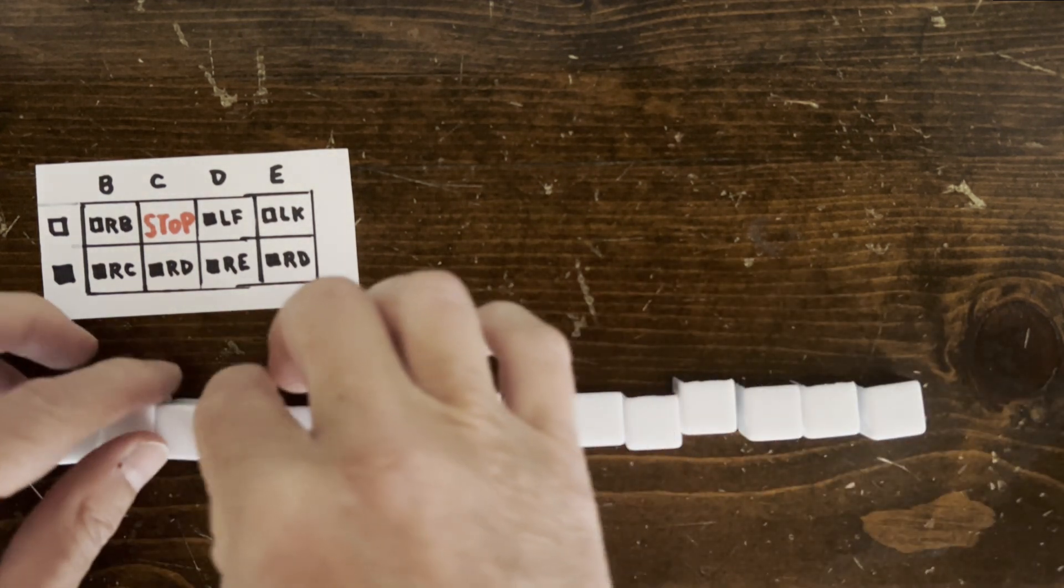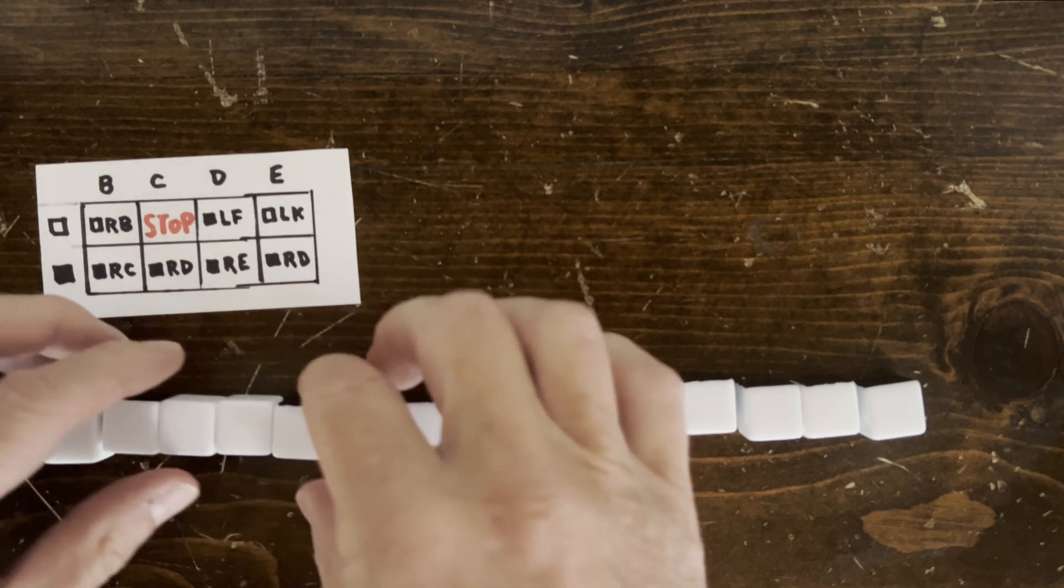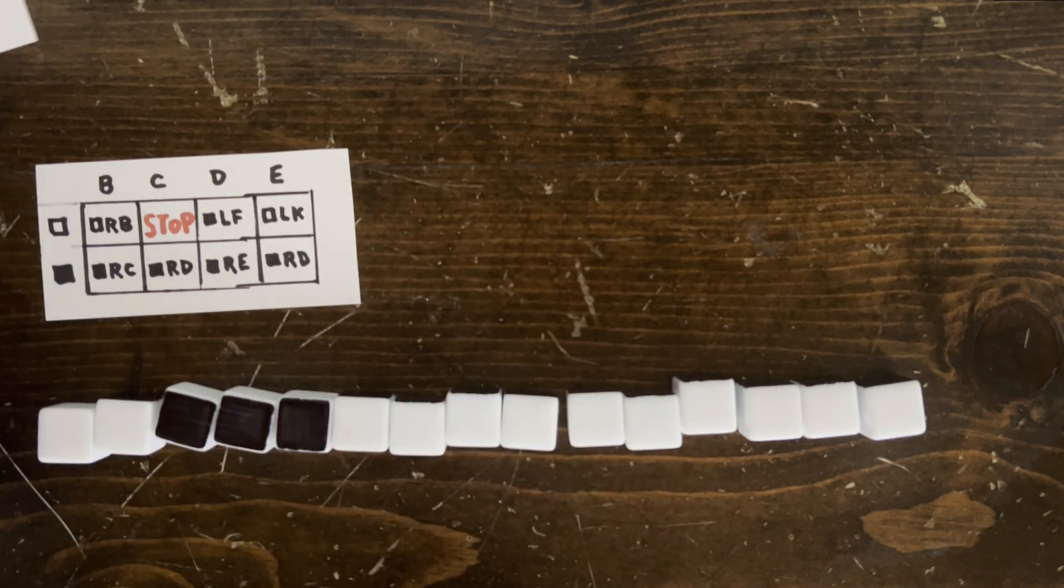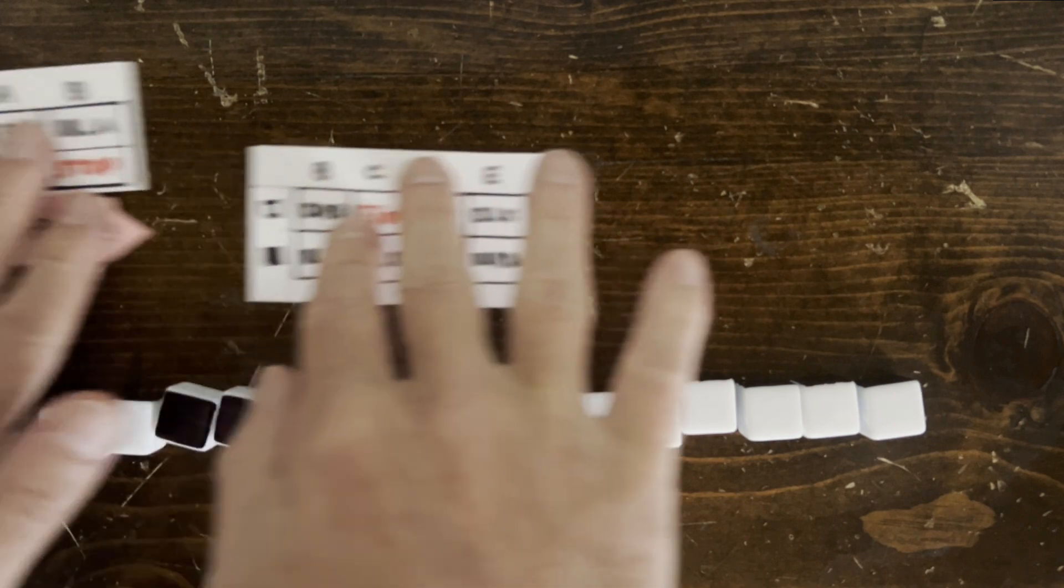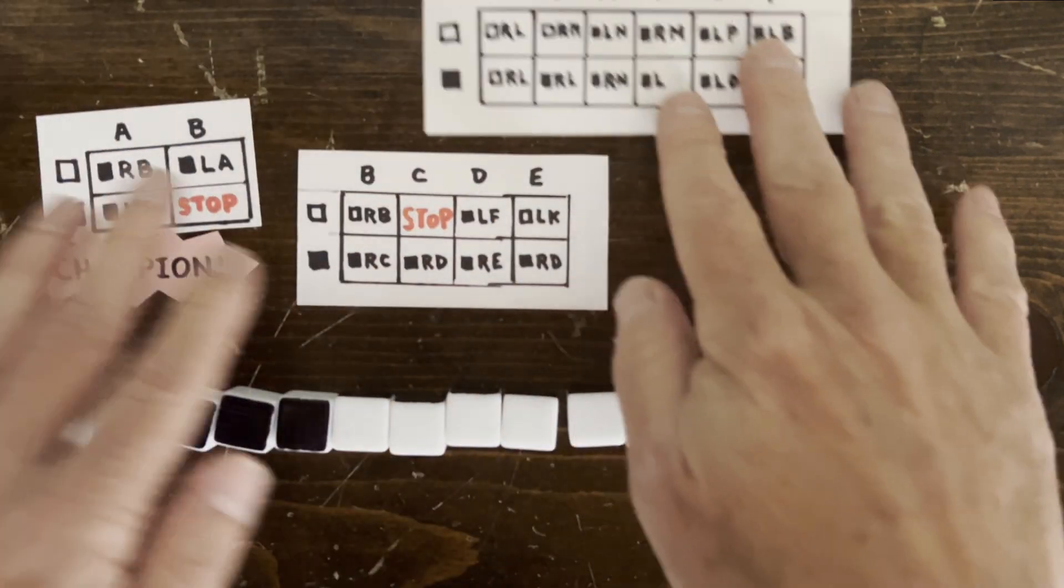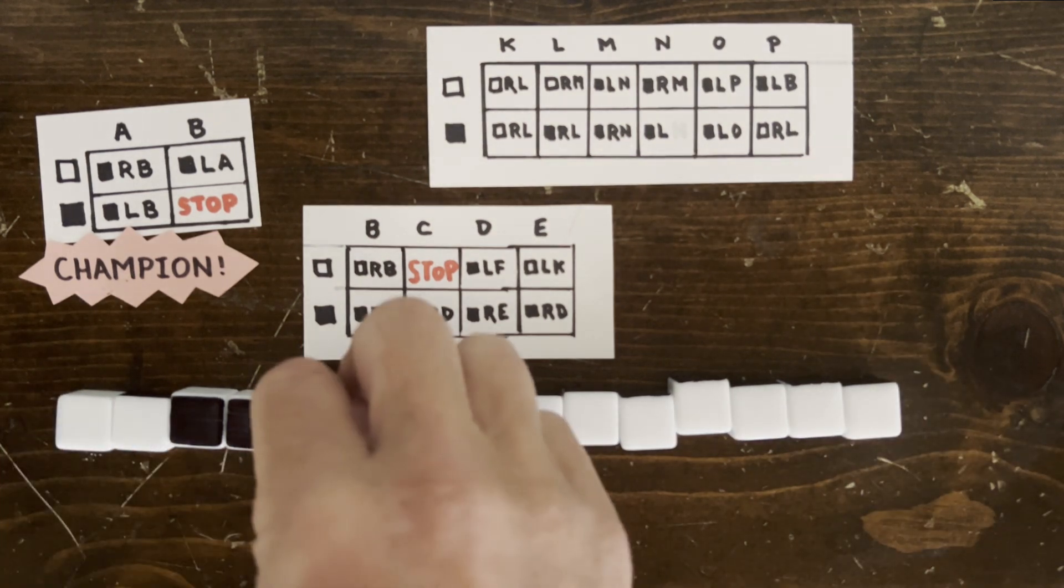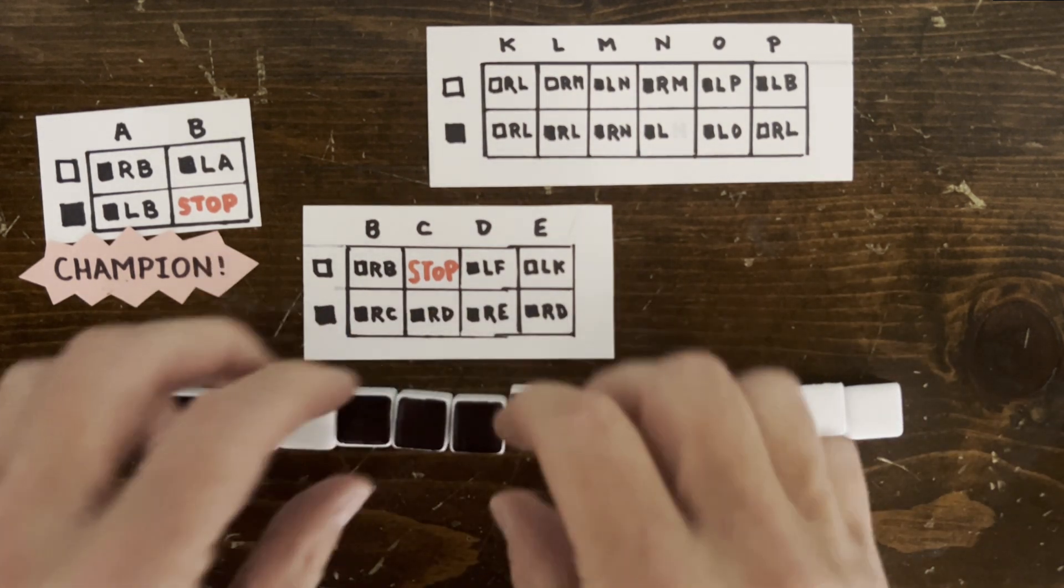And it takes about 30 states to build a machine that does this. But with some tricks, we can get it down to just 16 states. For odd numbers, we can repurpose the BB(2) champion, which writes 4 black cells with only 2 states. We go back and add a 5th black cell on the left before continuing to process the odd number. These 6 states process odd numbers this way.